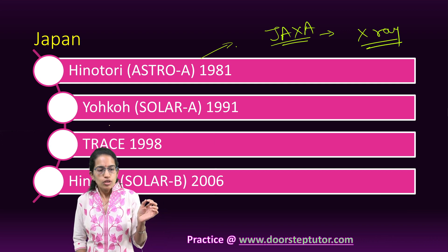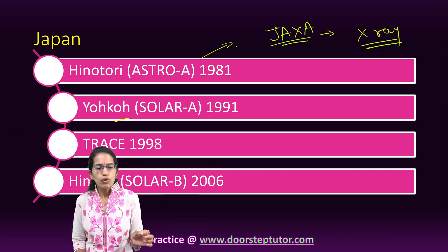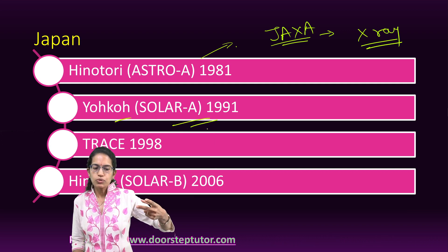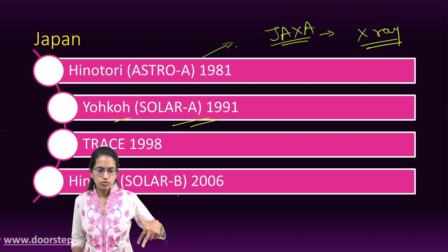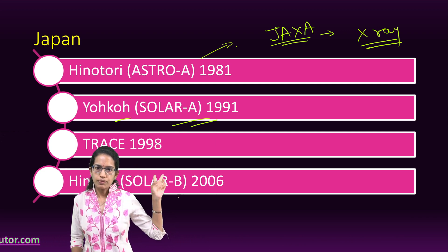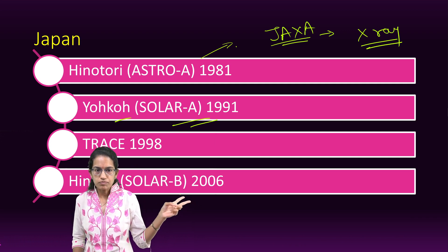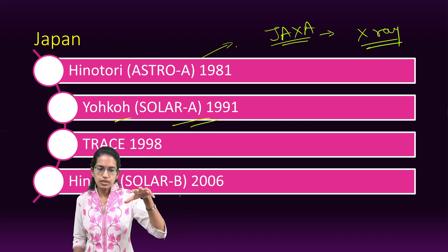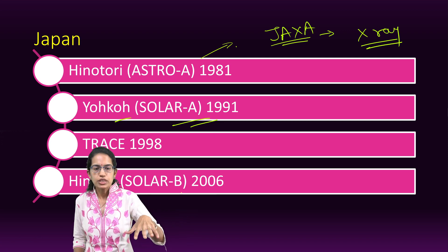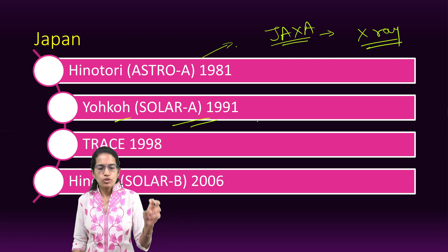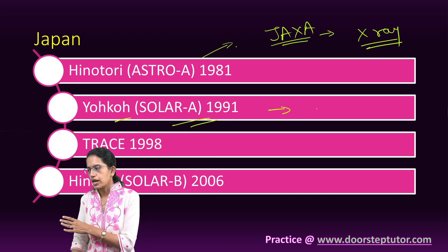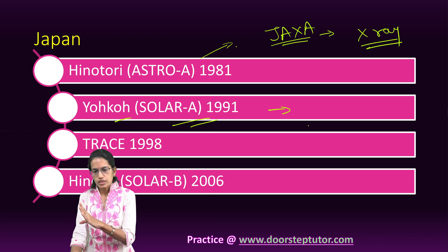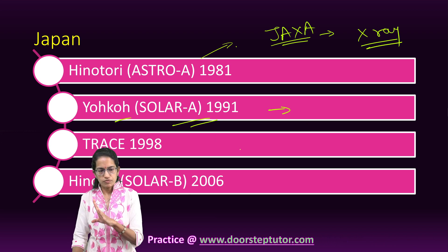The next was Yohkoh, which is Solar A. The names Solar A and Solar B here are different missions by Japan — do not confuse them with names given by the US. Yohkoh was launched to understand the outer atmosphere of the sun.